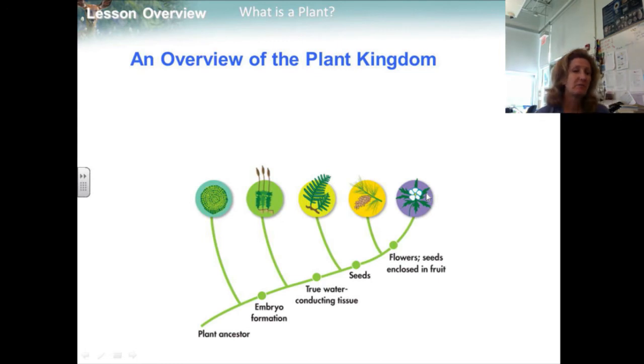Several groups of plants evolved from the first land plants. One group developed into mosses. Another lineage gave rise to the ferns, cone-bearing plants, and then flowering plants. Botanists divide the plant kingdom into five major groups based on four important features: embryo formation, specialized water-conducting tissues, seeds and flowers. The relationship to plant groups is shown here.